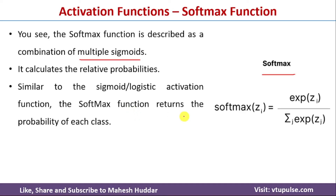Similar to the sigmoid function, softmax returns the probability of each class. However, if you add all those probabilities, the sum will be equal to 1 — unlike the sigmoid function, where the sum was not equal to 1.